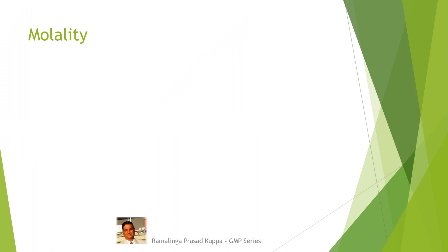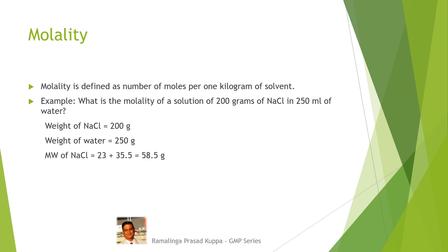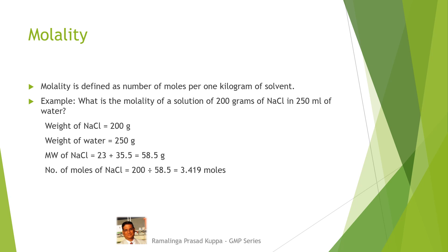Let us understand what is molality. Molality is defined as number of moles per 1 kilogram of solvent. Example: what is the molality of 200 grams of sodium chloride in 250 ml of water? Weight of sodium chloride is 200 grams; 250 ml of water is considered as 250 grams. Molecular weight of sodium chloride is 58.5 grams. Number of moles of sodium chloride in 200 grams is 200 divided by 58.5, equal to 3.419 moles. Molality is 3.419 multiplied by 4, because 250 grams is one-fourth of 1 kg, giving 13.676 molality.